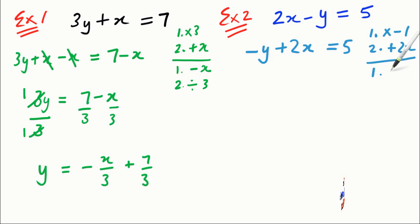To undo both of those things, undo the last thing first. That's undo plus 2x, the opposite of that is minus 2x. Then undo times by minus 1, and the opposite of that is divide by minus 1.